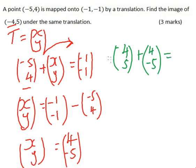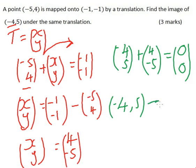This equals -4 plus 4, that will be 0. 5 plus -5 is 0. That means our point (-4, 5) will be mapped onto (0, 0). And that is how you get the answer.